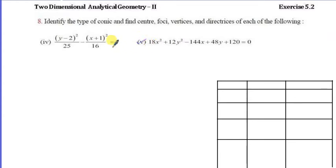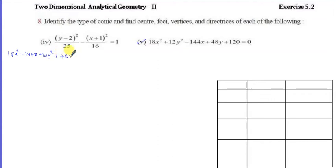We will see the equation in standard form. The equation is 18x² plus 144x plus 12y² plus 48y plus 120 equal to 0. If we apply the completing the square method, the x term coefficient is 144.